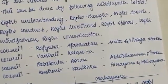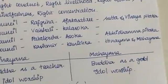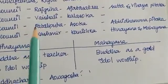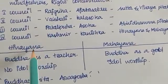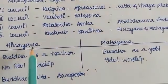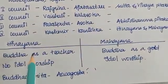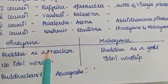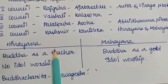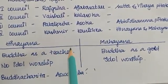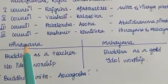For the second council, after this split, Buddhism is called Mahayana Buddhism. You find Buddha is a teacher in this tradition.